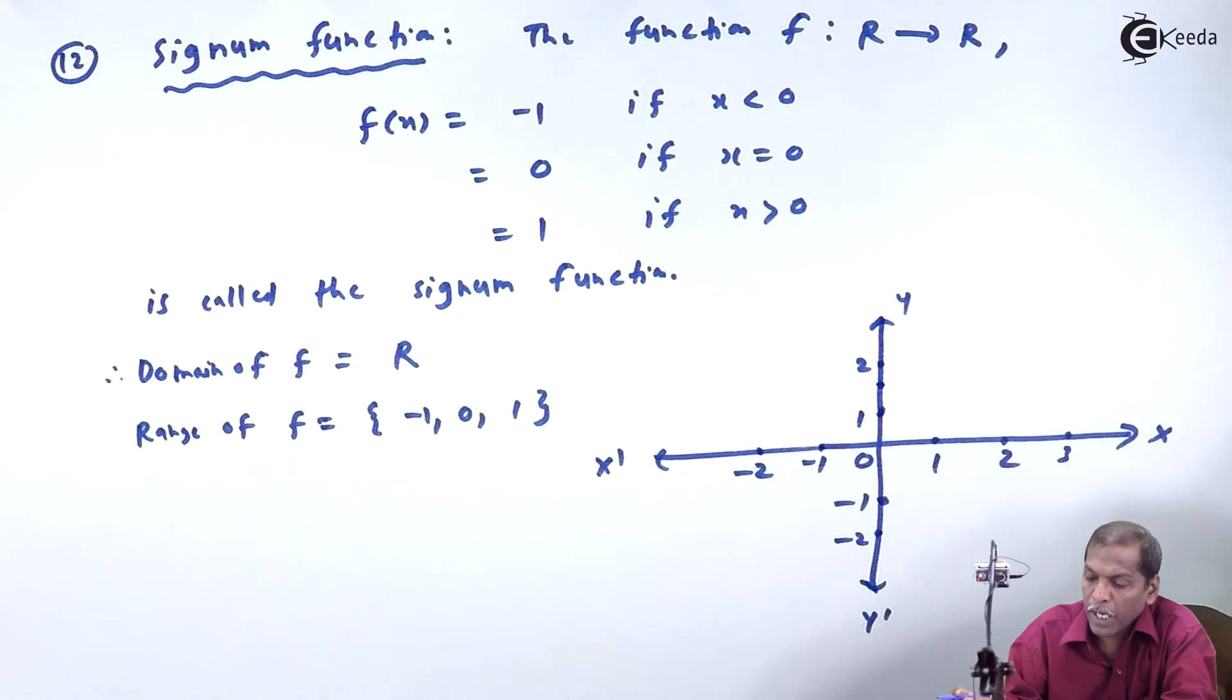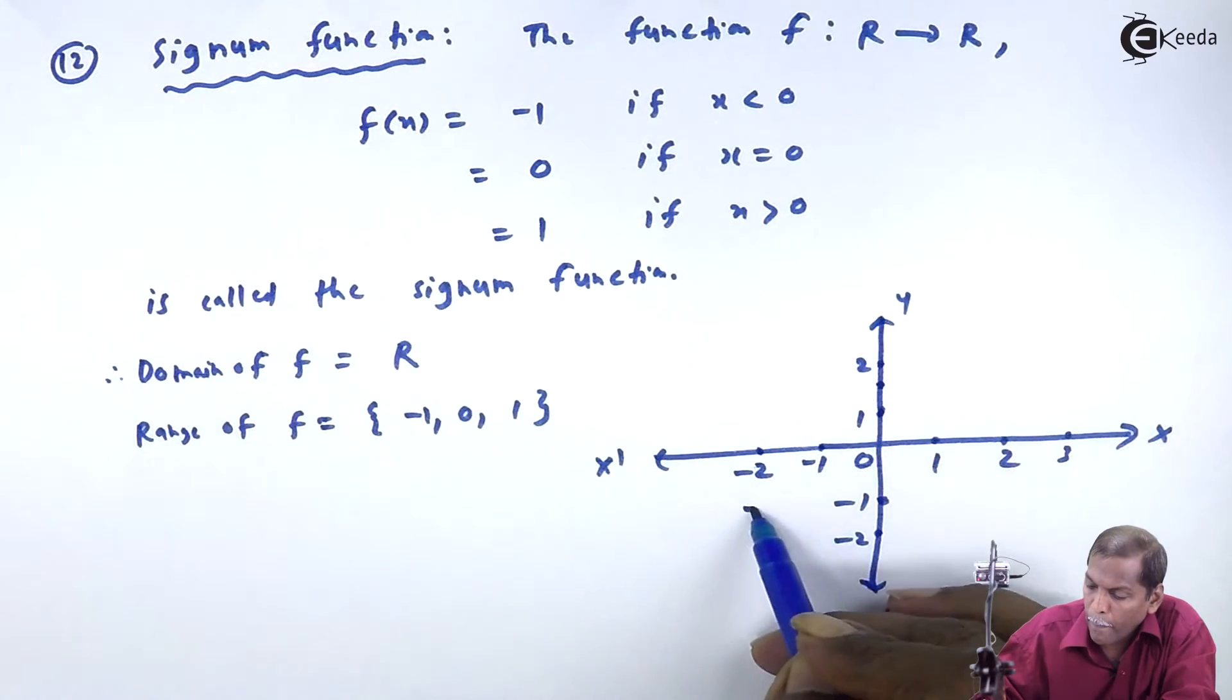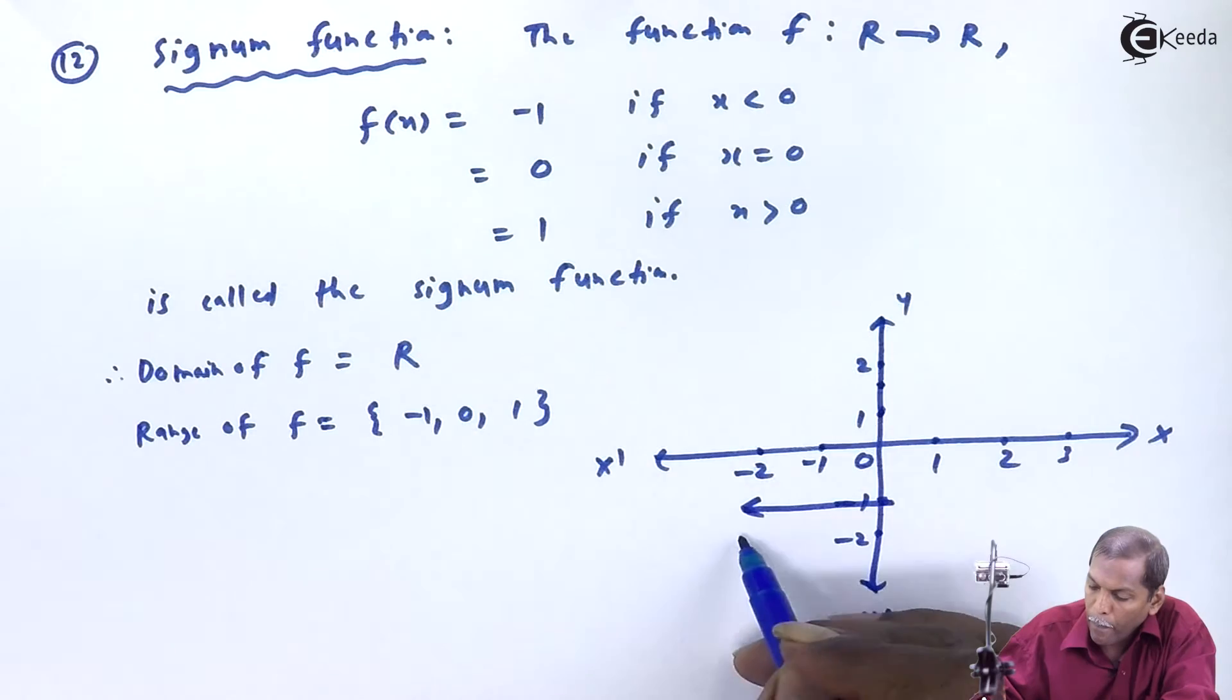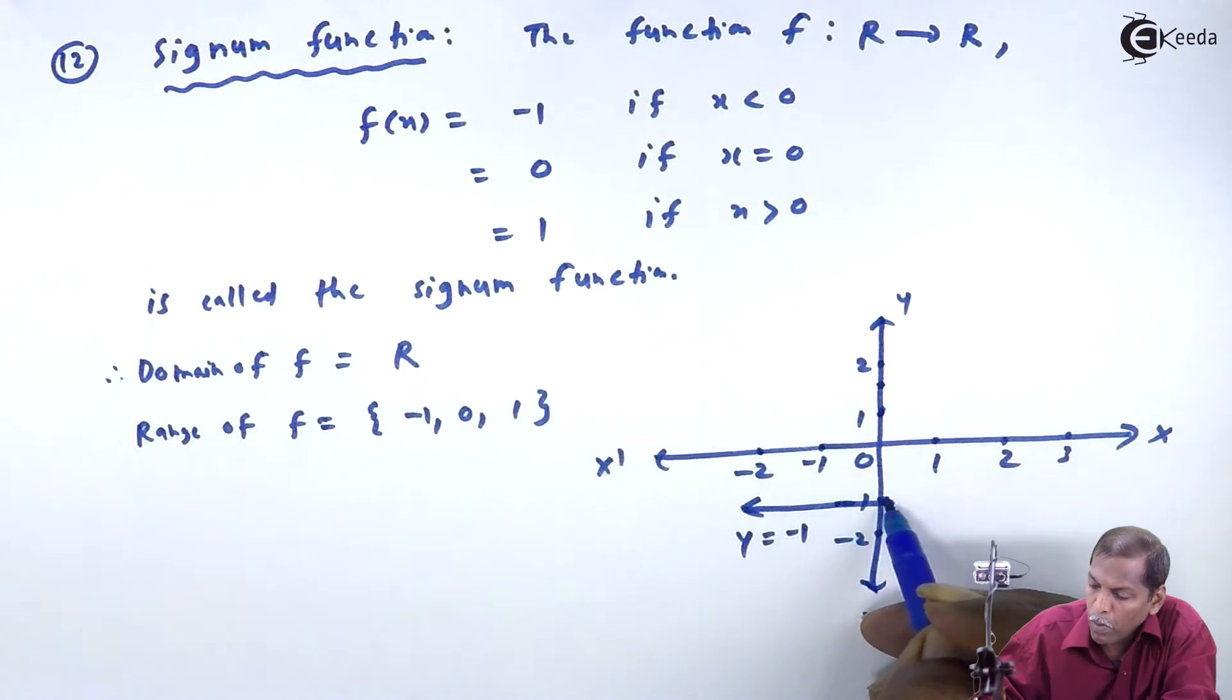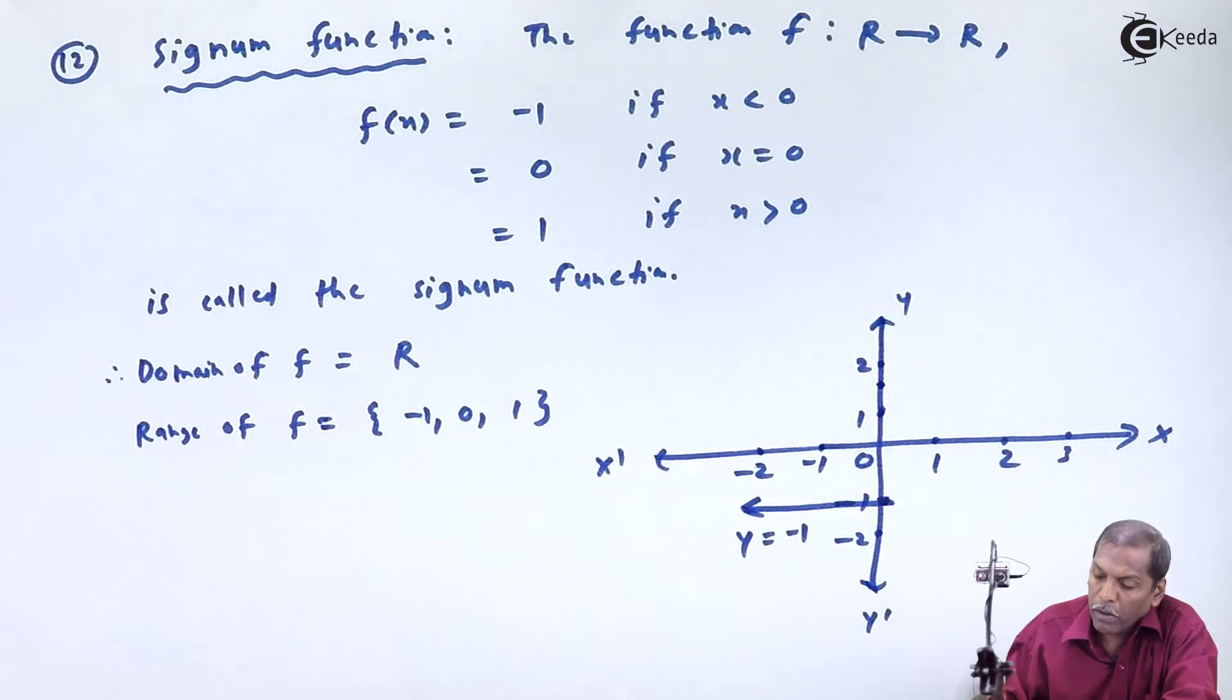so that is a line parallel to the x-axis. So here is a line y = -1.